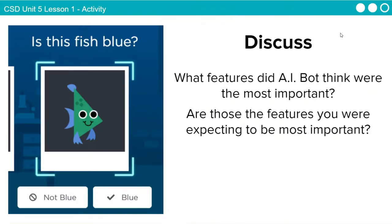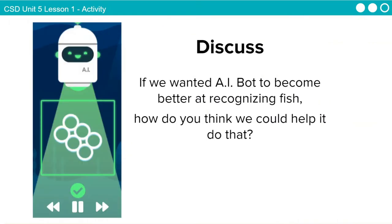Think about what features AI Bot found most important — are those the features you were expecting to be most important? This probably wasn't a too complicated problem. This is one example of how the problem-solving process and machine learning can be used to solve a problem. We prepared our data, used it to train AI Bot, then reflected on the results and decided what to do next.